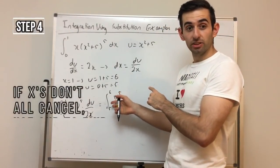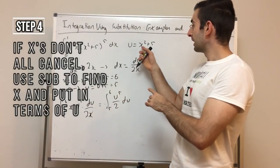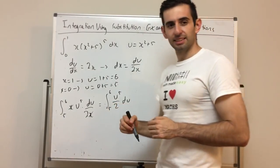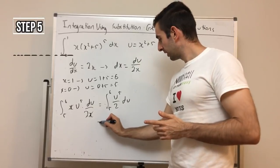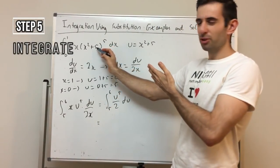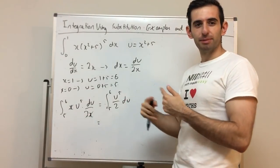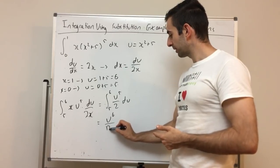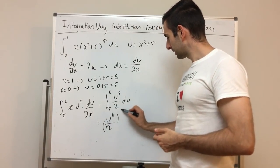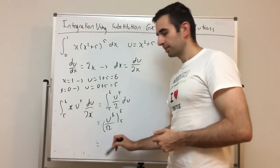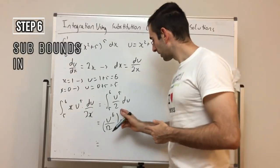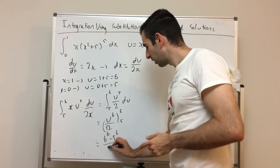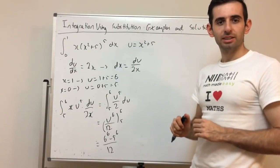A note: if the x's don't cancel, you'll need to back-substitute x in terms of u — I'll show that in the next example. Now the easy step: integrate u⁵ / 2. Add one to the power and divide by the new power — u⁵ becomes u⁶/6, and dividing by 2 gives u⁶/12. Then substitute the bounds: 6⁶/12 minus 5⁶/12. Just plug that into a calculator and you're done.